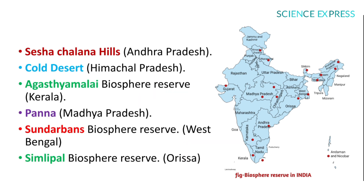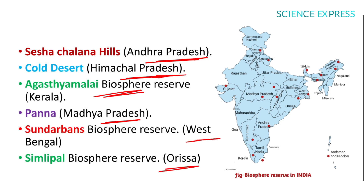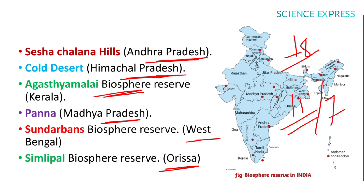Further biosphere reserves: Seshachalam in Andhra Pradesh, Cold Desert in Himachal Pradesh, Agasthyamalai in Kerala, Panna in Madhya Pradesh, Sundarbans in West Bengal, and Simlipal in Odisha. These are the 18 biosphere reserves of India, of which 11 are World Heritage Sites and 7 are domesticated.